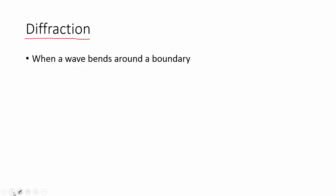Diffraction is also a bending of a wave, but it's different — it's not due to a change in media, so the wave speed isn't changing. It's because of a boundary. If I draw wave fronts moving in one direction and there's a boundary with a small opening, some of these waves pass through that opening, but once they come out they actually expand and bend. So instead of just a straight line of waves coming out, I get groups of waves going in multiple directions — the waves spread out into the region beyond the opening. That's the diffraction pattern from an opening.